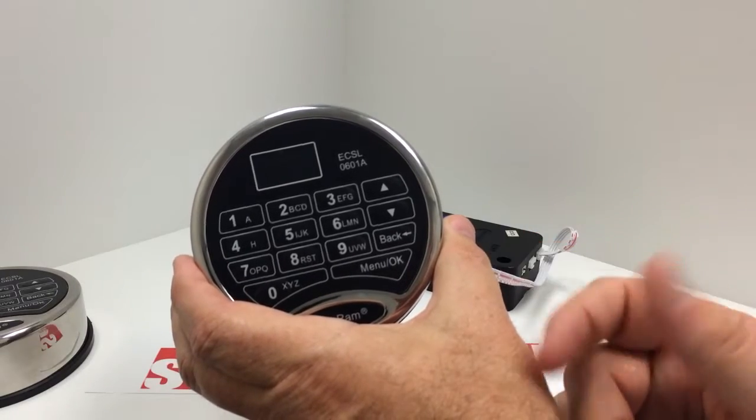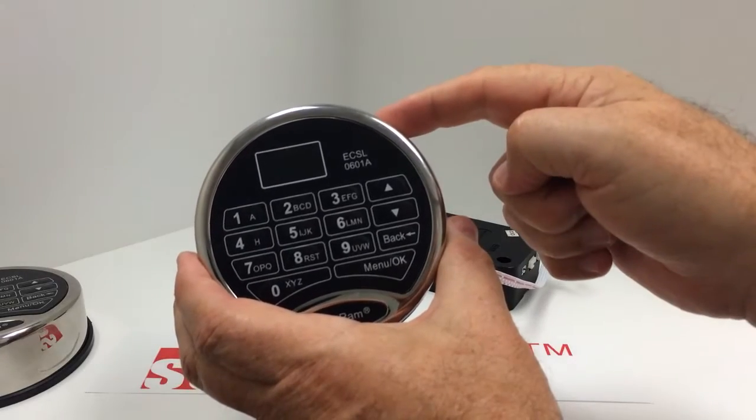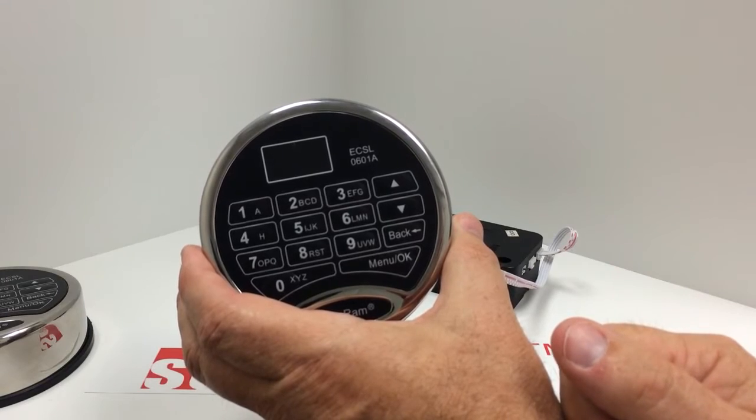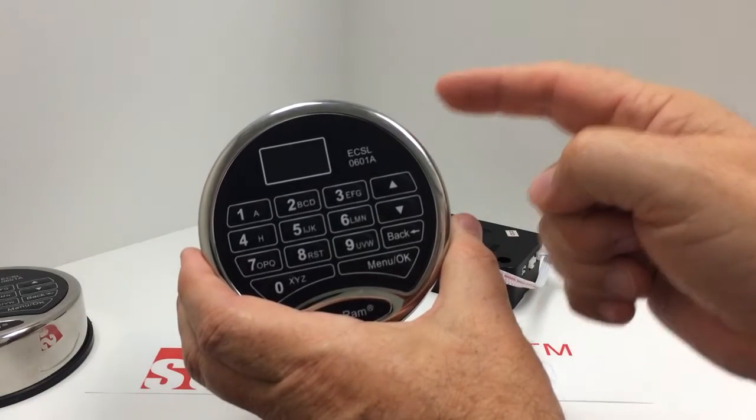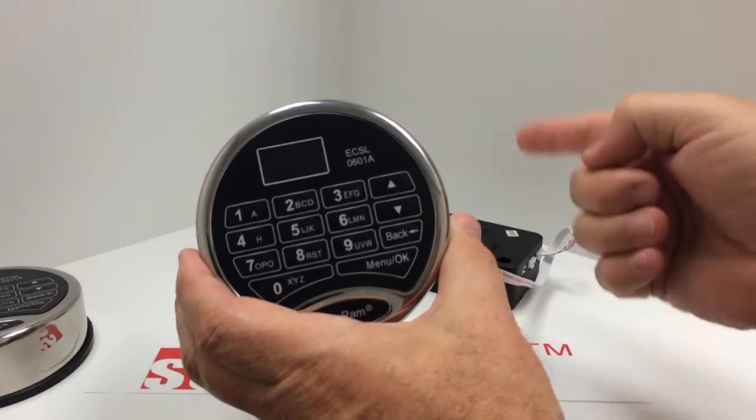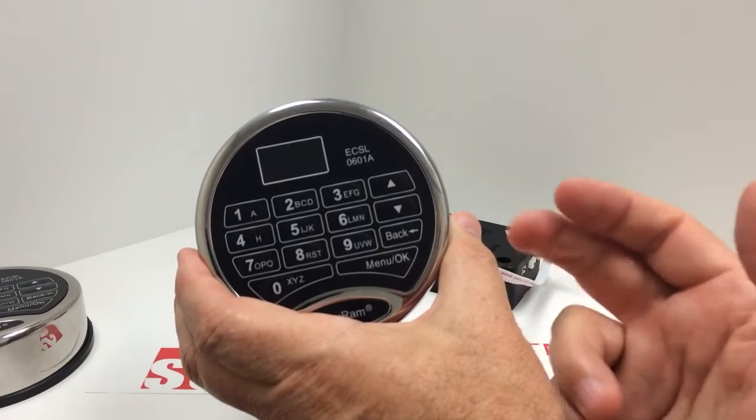So what you have to do is you have to do four things. You have to program the super code, whatever the super code is inside this lock. We have to program the encryption key. The encryption key is an algorithm number that allows you to encrypt data between the lock and the entry pad. And then you have to program the recovery code.